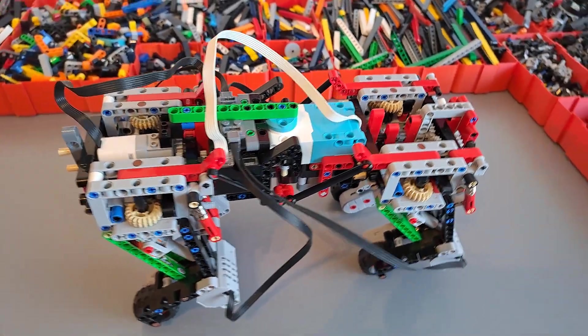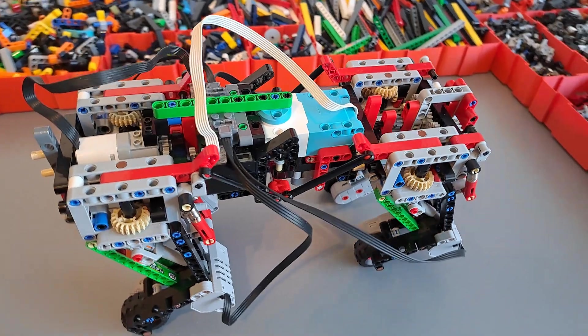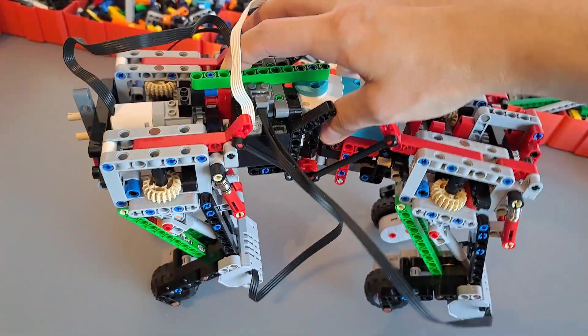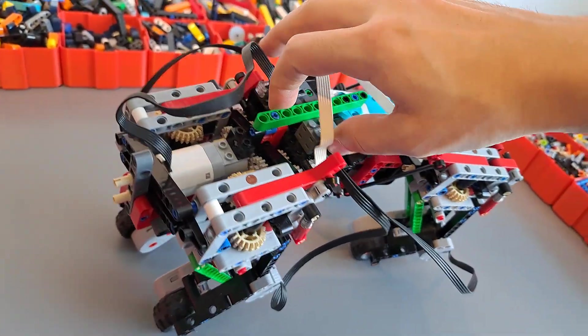Since this is the first prototype, it still has some big bugs and stuff to solve. So the basic idea was that when I steer the model, these links here at the side would cause the body to tilt.